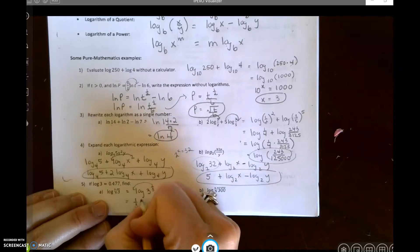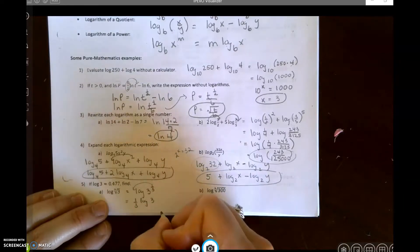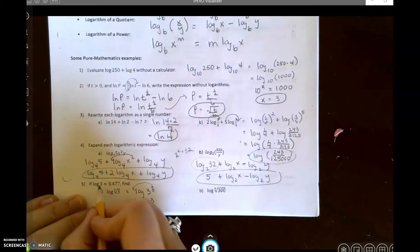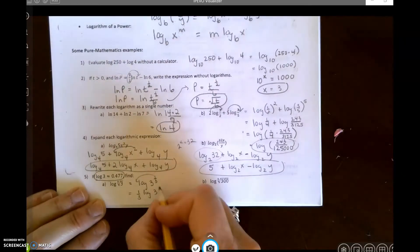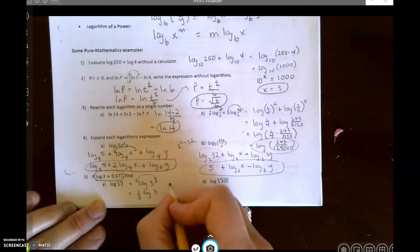So I have one-third times the log of 3. Well, and I know what the log of 3 is. The log of 3 is 0.477.